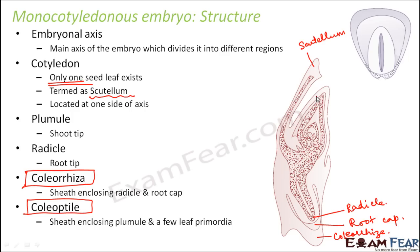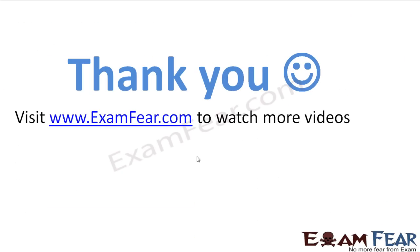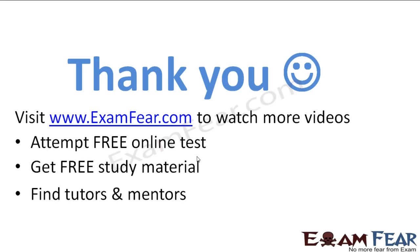The coleoptile covers the plumule region, and the coleorrhiza covers the radicle and root cap. These structures — coleorrhiza and coleoptile — are not present in the dicot embryo. This is how a monocot seed looks, with the embryo present at its center. Thank you, please visit examfear.com to watch more videos, attempt free online tests, get free study material, and find tutors and mentors.